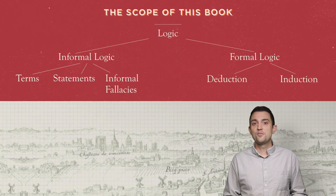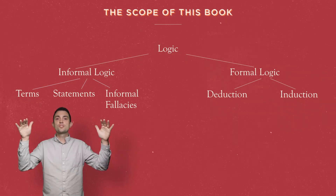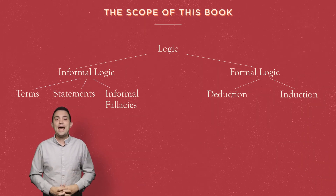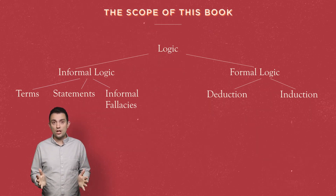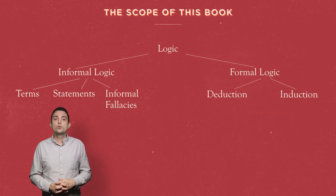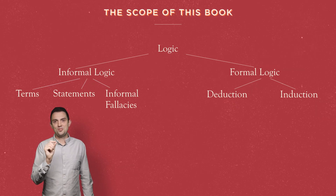Deductive arguments, on the other hand, argue from universal statements that are assumed to be true, called axioms — such as 'all men are mortal, Socrates is a man, therefore Socrates is mortal.' In deduction, the conclusions are not only probable; they're certain, depending on how certain the premises are. If it is true that all men are mortal and it is true that Socrates is a man, then it must be true that Socrates is mortal — no 'probably' about it. Socrates is in fact dead already. The conclusion follows necessarily, not probably, from the premises. That's deductive reasoning.